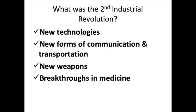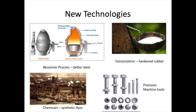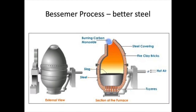Let's look at each. New technologies included the Bessemer process, vulcanization, chemicals, machine tools, and electricity. The Bessemer process produced stronger and cheaper steel. This led to more extensive and better railroad building that could now rely on affordable steel rather than iron.